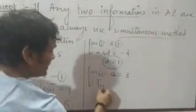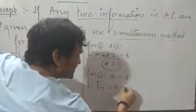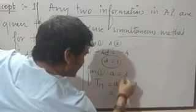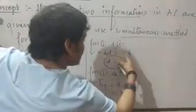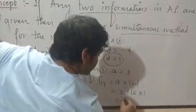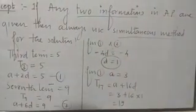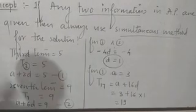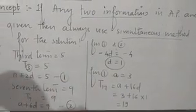What they want? 17th term. T17. Do not write A plus 17. It is A plus 16D. A is 3, plus 16D. D is 1. Answer is 19. Seventeenth term is 19. You are getting it? This is question number 20. Clear?